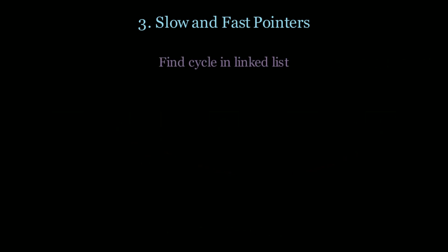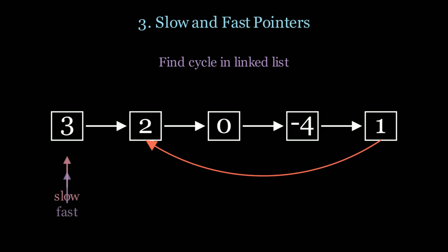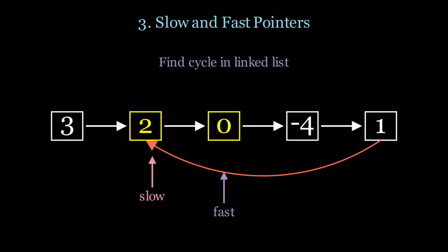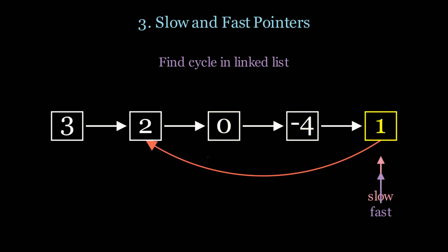Can we do this in one pass using constant space? We initialize two pointers — slow and fast. Slow moves once, fast moves twice each iteration. Eventually, if there's a cycle, slow will intersect with fast. Now we have O(n) time complexity with O(1) space.